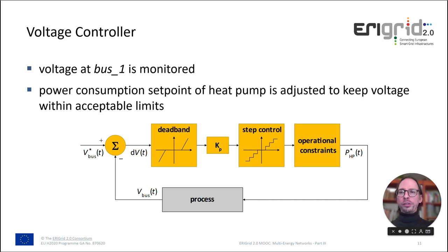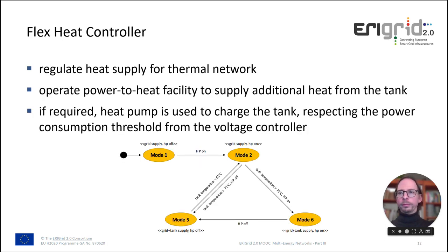The voltage controller monitors the voltage at bus 1 and calculates power consumption setpoints to adjust the voltage within accepted limits. The controller implements a step controller and sends its output to the flex-heat controller. The flex-heat controller then regulates the heat supply for the thermal network, and whenever required, the heat pump is used to charge the tank, always respecting the power consumption threshold from the voltage controller.